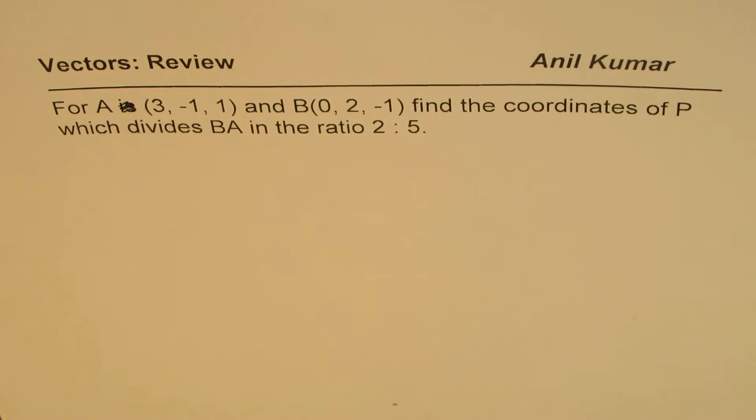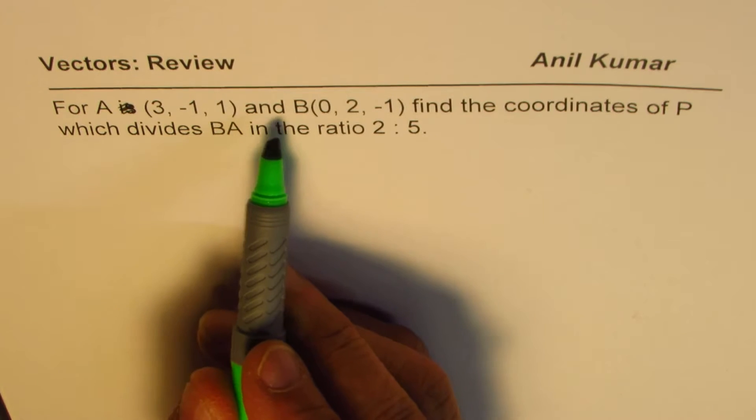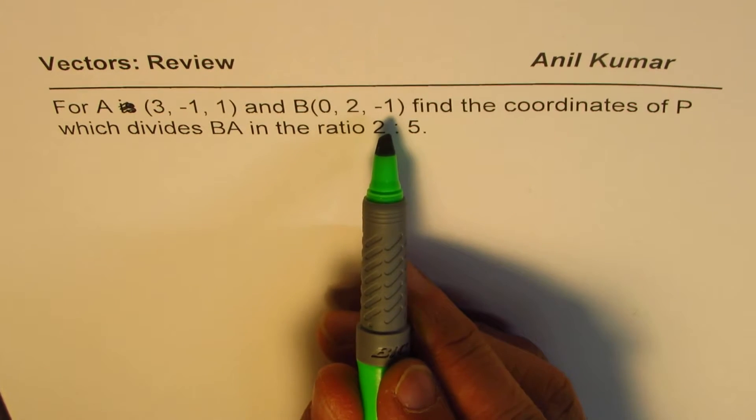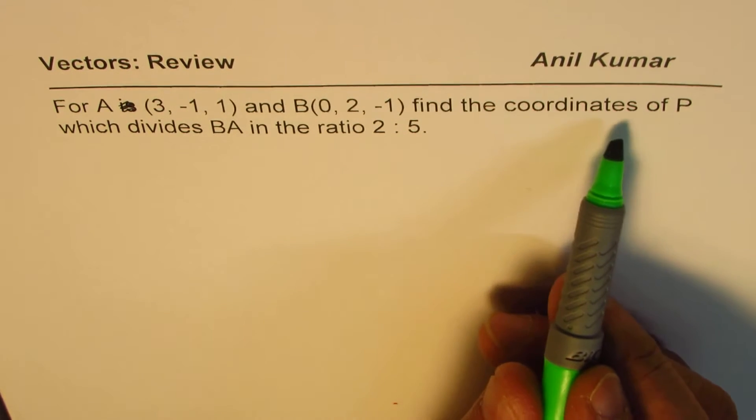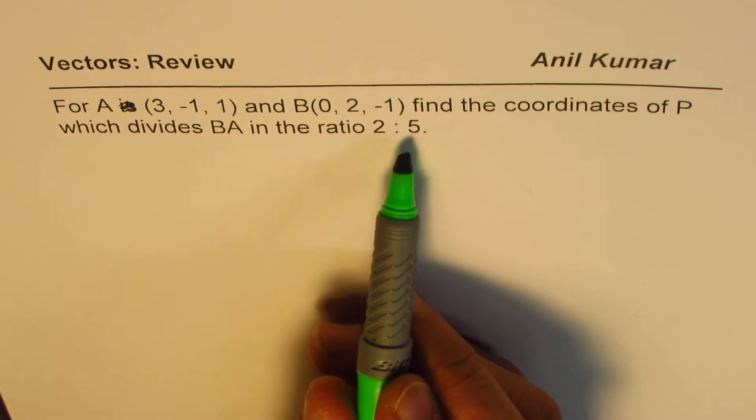I'm Anil Kumar sharing with you a very important question from test point of view. We are reviewing vectors and here is a test question from previous IB test paper. The question is, for A(3,-1,1) and B(0,2,-1), find the coordinates of P which divides BA in the ratio 2:5.